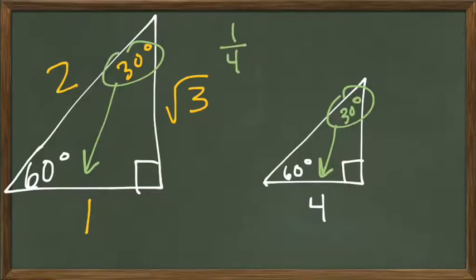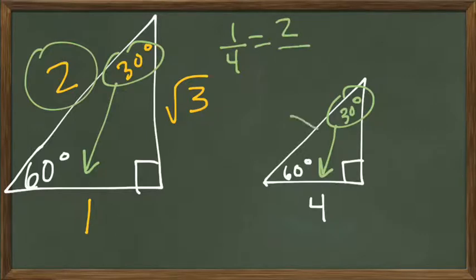Or 4 over 1, whichever one you want, equals, let's solve the hypotenuse first, so 2. So 2 over, we'll call this x, so 2 over x. So lucky for us, how do I get from 1 to 2? I multiply by 2.